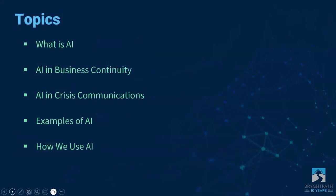The topics that we're going to cover are a level setting of what is AI, AI in business continuity, AI in crisis management, some examples, and then how we use it here at Bright Path.